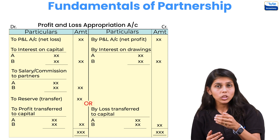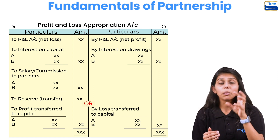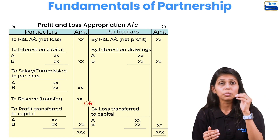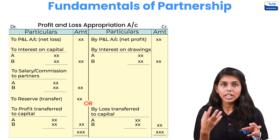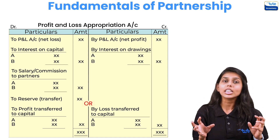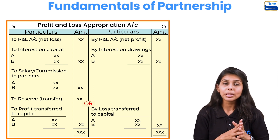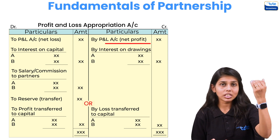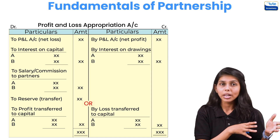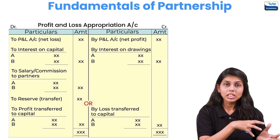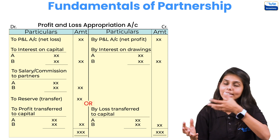The P&L Appropriation Account starts with the net profit or net loss transferred from the P&L account. Gross profit and gross loss transfer from trading to P&L; from P&L, net profit or net loss transfers to P&L Appropriation. On the credit side we have net profit from P&L account, and also interest on drawings — when partners withdraw money or goods for personal use, the firm charges interest, which is an income for the firm.